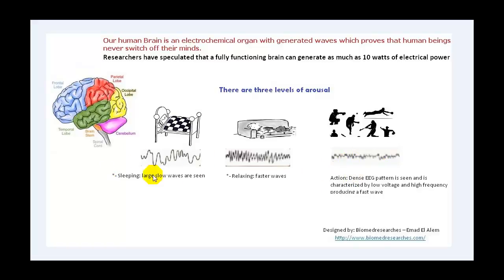These are examples of the three arousals. During sleeping, slow waves are large — we have low frequency and high amplitude. During relaxing, the waves become faster. And during action, the waves become very fast, which means the frequency is becoming high and amplitude is becoming low.